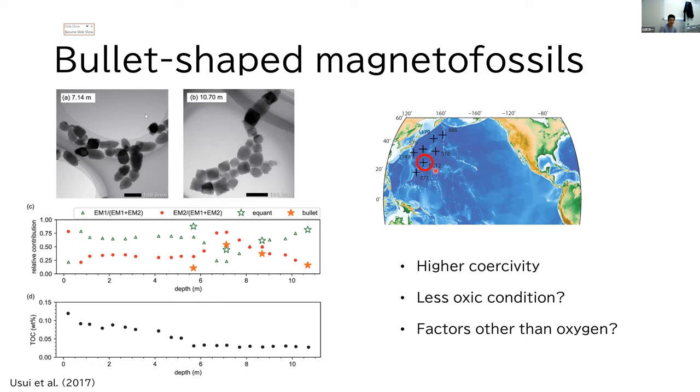I think we can speculate the meaning of the bullet-shaped magnetite in two ways. On the one hand, elongated magnetofossils have been thought to represent less oxygen condition. And so the presence of bullet-shaped magnetofossils in deep sea red clay may suggest that these can be used as a paleoenvironmental proxy.